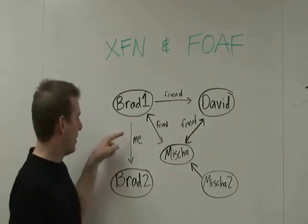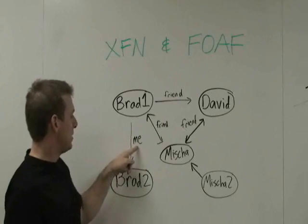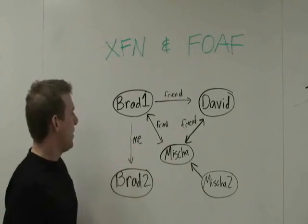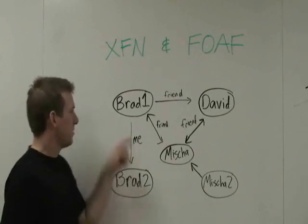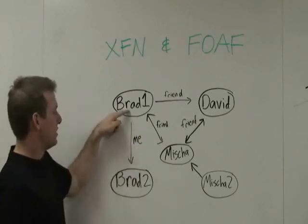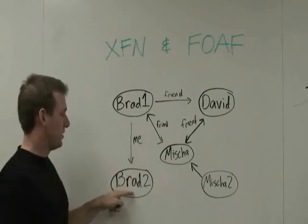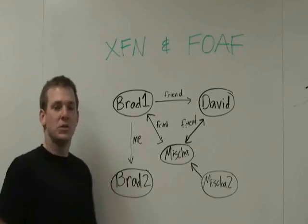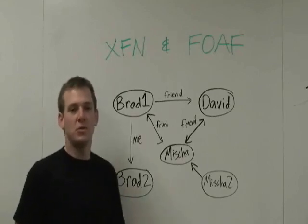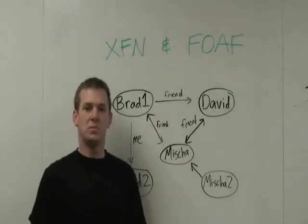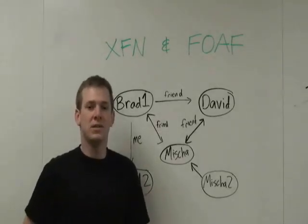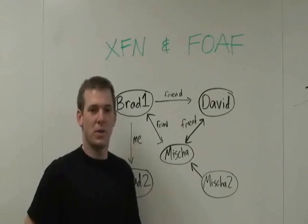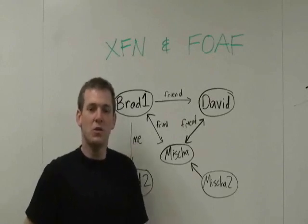The other type of popular annotation is the me link. And this link says, for my homepage, I link to my Twitter and say this is also my account. So basically, you have these two types of annotations — that of friendships and of me's saying that's also my stuff. So what can you do with all this?